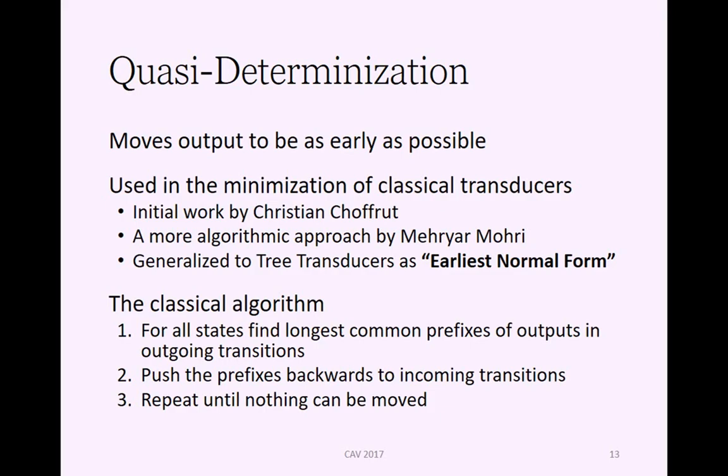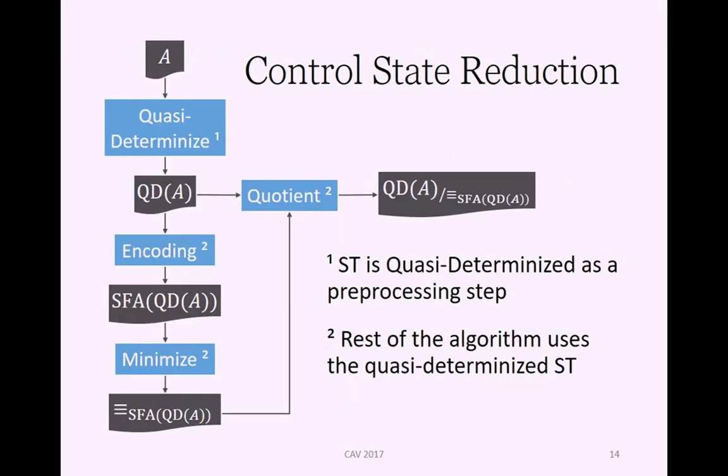The classical algorithm is pretty simple. You look at every state in the transducer, and then you find the longest common prefixes of outputs in all outgoing transitions. If you find a prefix, then you take that prefix from the outgoing transitions and push it back onto the incoming transitions, just kind of moving the output to be earlier. Then you repeat this process for all of the control states until you can move nothing more so you've reached a fixed point.